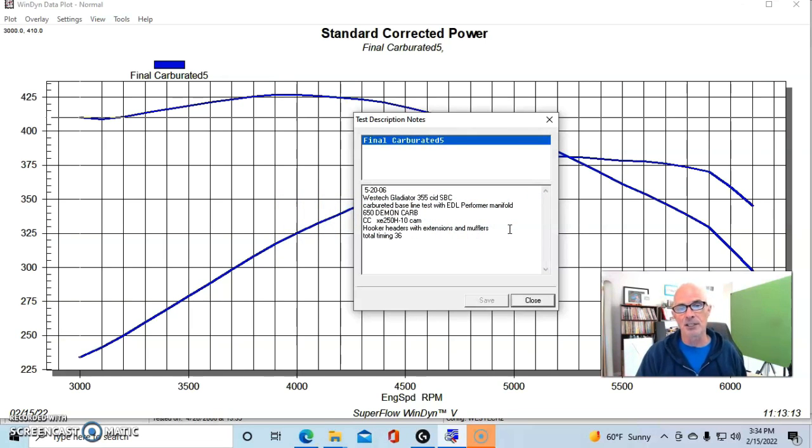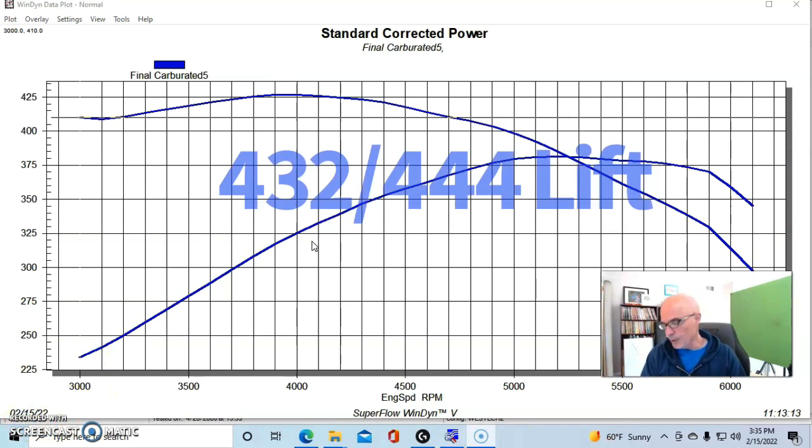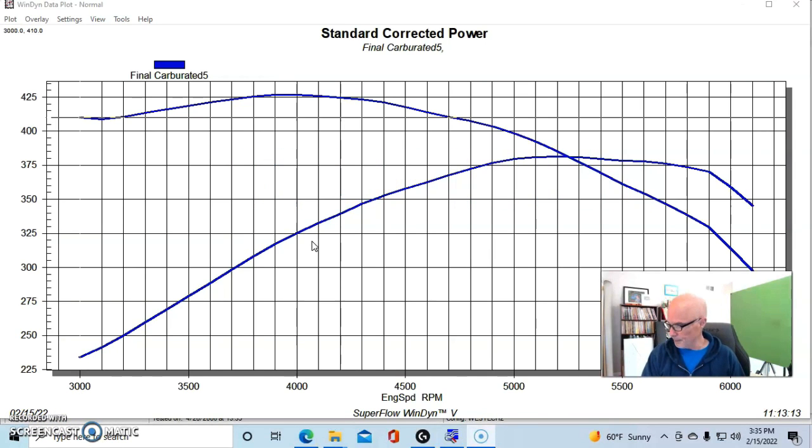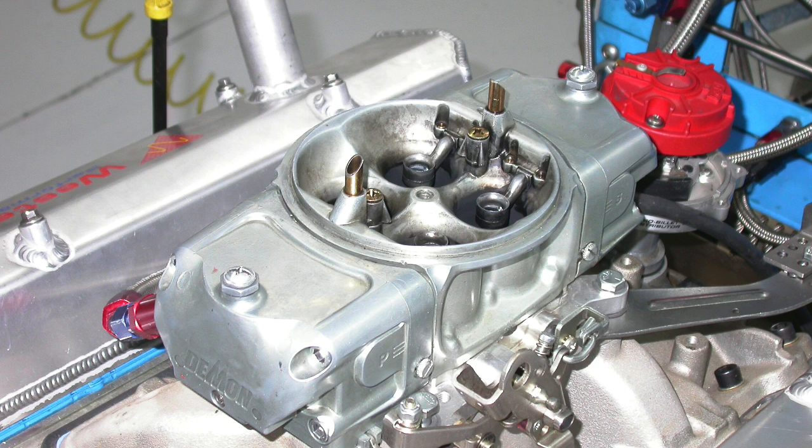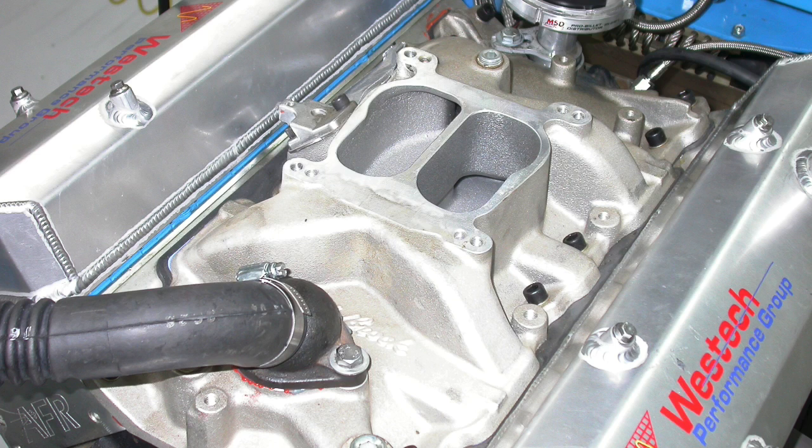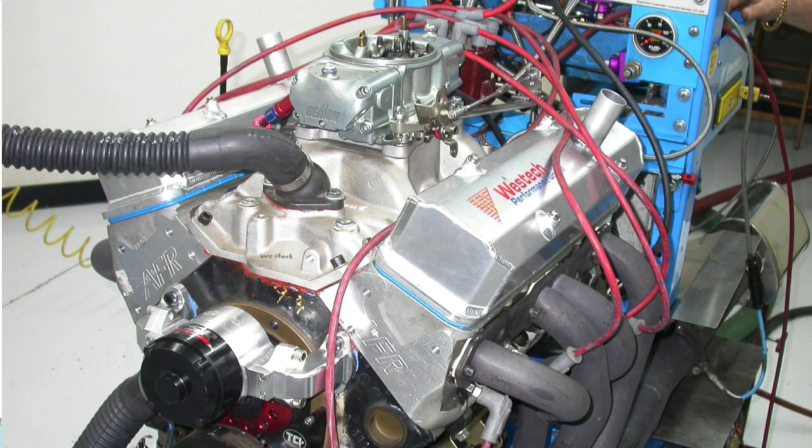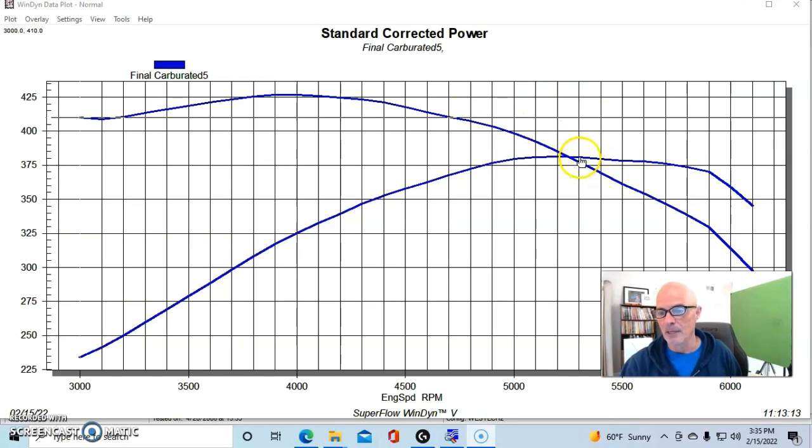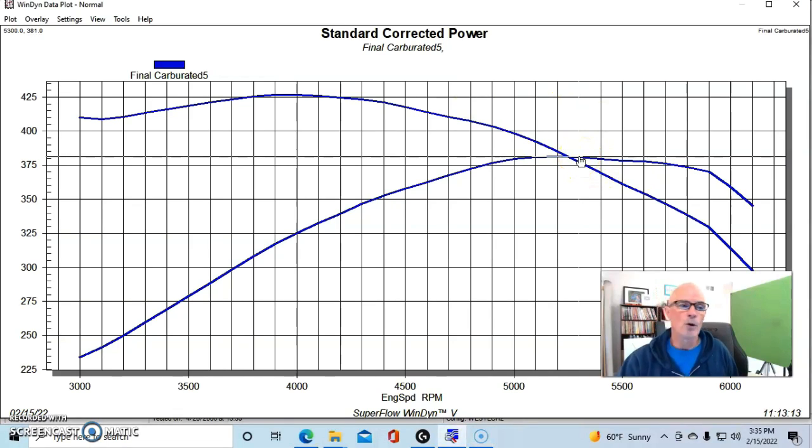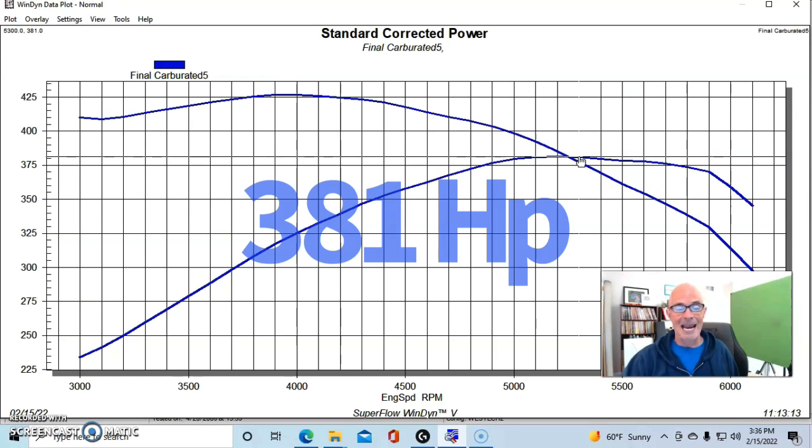We started things out with an Extreme Energy 250H - a hydraulic flat tappet camshaft, XE 250H-10. The mild camshaft offered a 432-440 lift split, a 206-212 degree duration split, and 110 degree lobe separation angle. Very mild - in fact it's the lowest one on the listing for the Extreme Energy camshafts for the small block Chevy. With the small camshaft, 650 carburetor, and small Edelbrock dual plane intake manifold, after optimizing the timing and air fuel, this combination made 381 horsepower and 427 foot-pounds of torque.